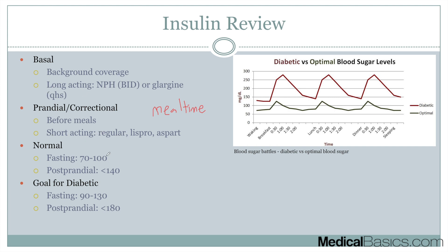Normal glucose is anywhere from 70 to 100 for fasting and postprandial of less than 140 in a normal patient, and 90 to 130 for fasting and postprandial of less than 180 for diabetic patients. So that's going to be our goal, and we're going to refer to this table quite a bit — I'll show you why in a second.